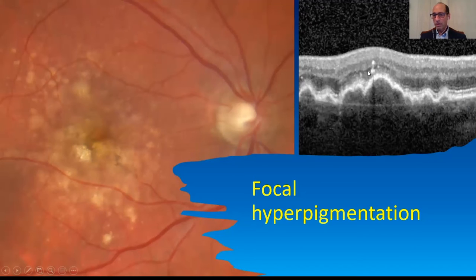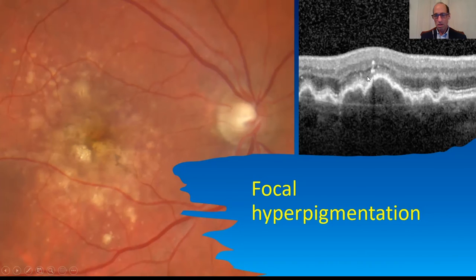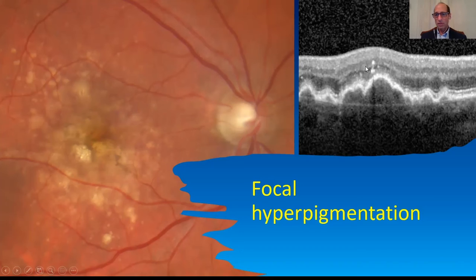This is often a precursor of geographic atrophy. It's probably accurate to call these pigment migrations. When reading an image, though, if you have just an OCT, call them intraretinal hyperreflective spots, which has come into common parlance. There are several things that can be intraretinal hyperreflective spots, but one of the big ones is pigment, and you can see a little shadowing underneath them.